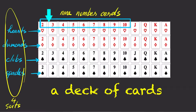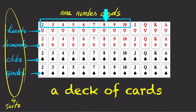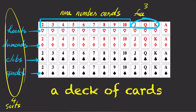The 9 number cards are 2, 3, 4, 5, 6, 7, 8, 9, and 10. Three of them are the face cards — jack, queen, and king — and one of them is the ace.